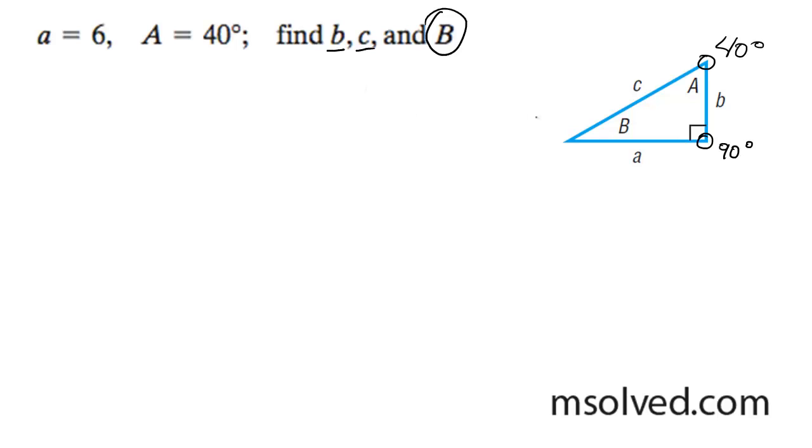So what we're going to do here is for angle B, it's going to be 180 minus 40 minus 90, which gives us 50 degrees.